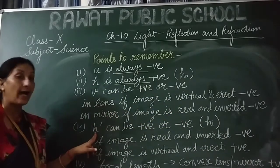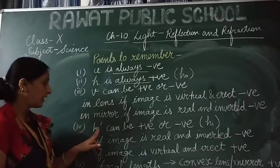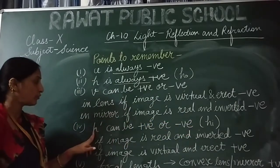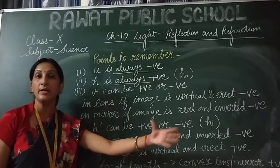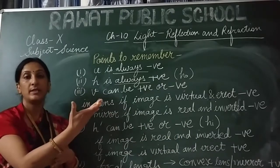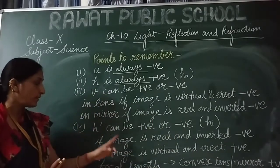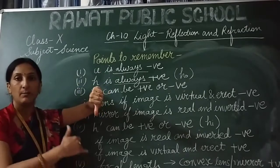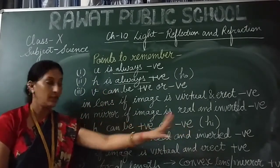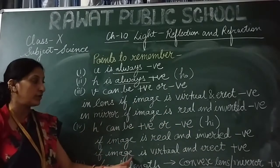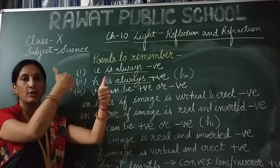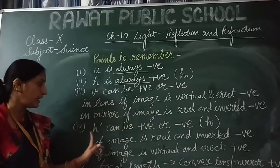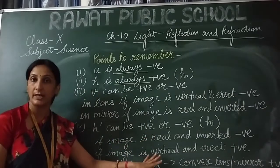The fourth point: h dash, the height of the image, can also be positive or negative. The image can form above or below the principal axis. If the image is real and inverted — below the principal axis — we put a negative sign with h dash. If the image is virtual and erect — above the principal axis — we put a positive sign.